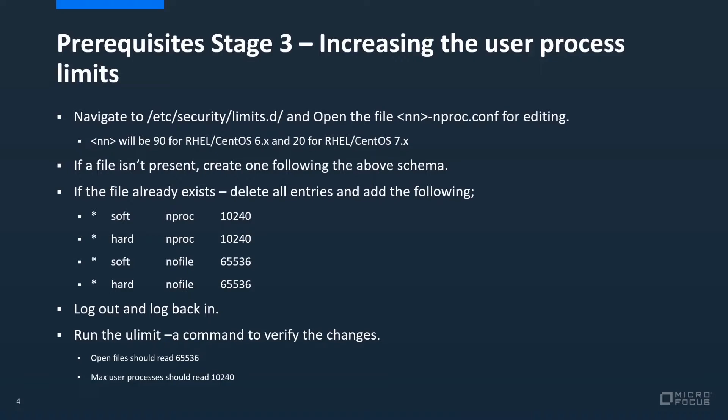Finally, we need to increase user process limits. Navigate to the directory /etc/security/limits.d and open the nproc.conf file. The starting two digits of this file may vary depending on your operating system — some guidance is shown on the slide. If there isn't a file already present, you can create one provided it follows the same naming scheme. If the file already exists, delete any existing entries and then add the following commands. Ensure that you save the file, log out, log back in.